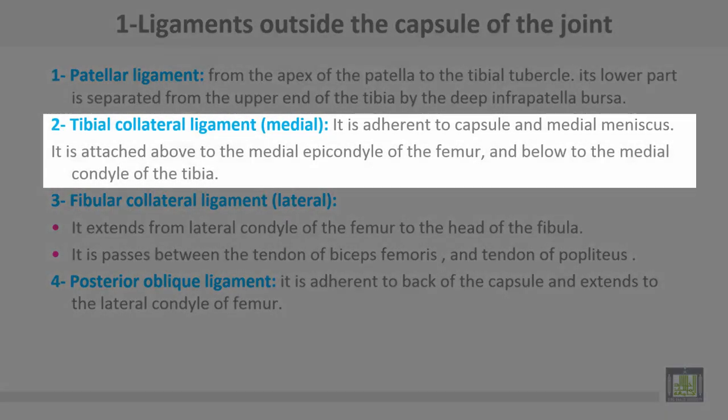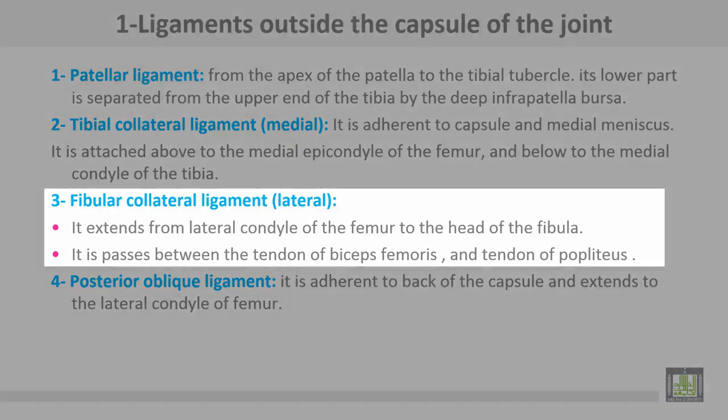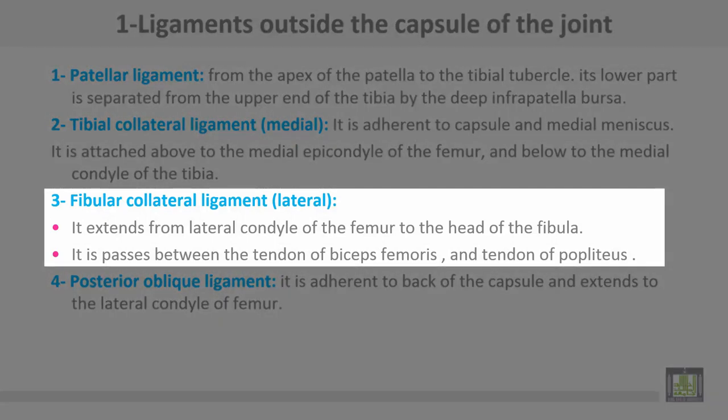The tibial collateral ligament, or medial collateral ligament, is adherent to the capsule and medial meniscus. It is attached above to the medial epicondyle of the femur and below to the medial condyle of the tibia. The fibular collateral ligament, or lateral collateral ligament, extends from the lateral condyle of the femur to the head of the fibula. It passes between the tendon of the biceps femoris and the tendon of the popliteus.